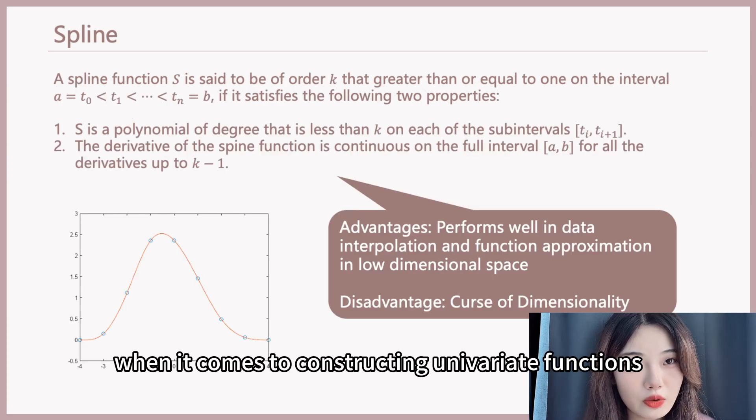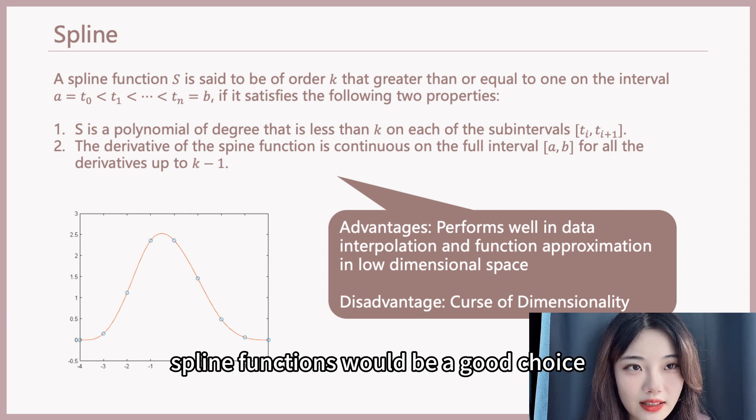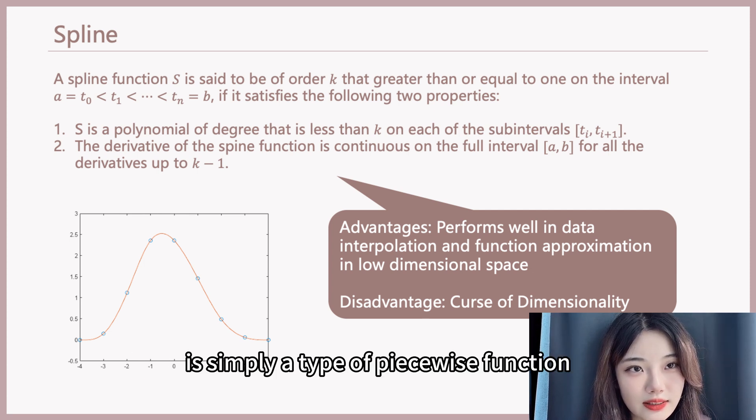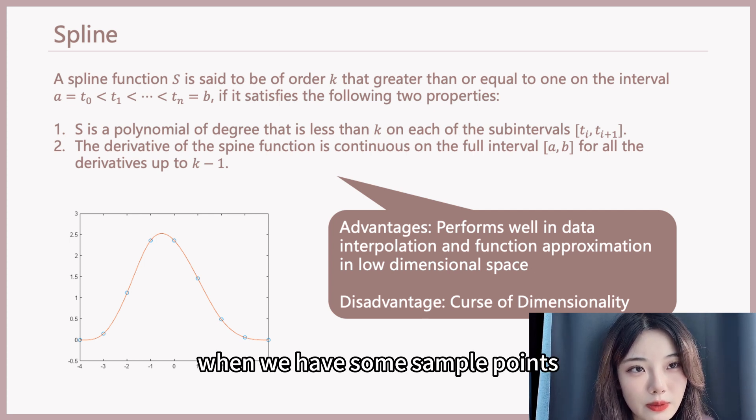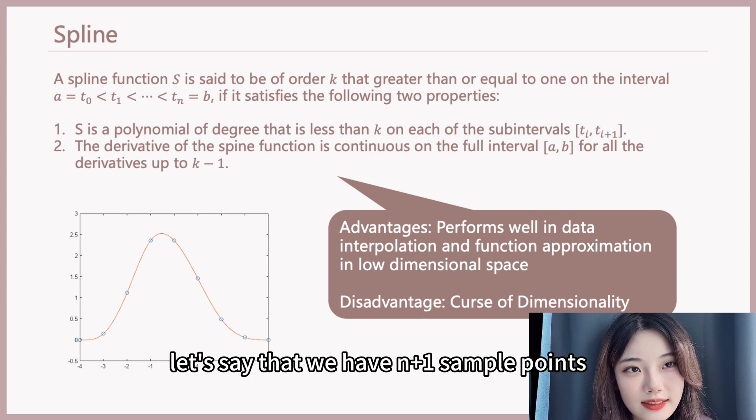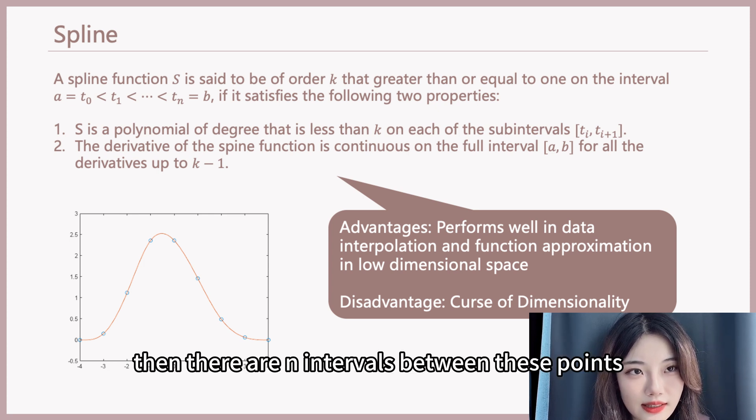When it comes to constructing univariate functions, spline functions would be a good choice. A spline function is simply a type of piecewise function. When we have some sample points, for instance, let's say that we have n plus 1 sample points, t0 to tn, then there are n intervals between these points.